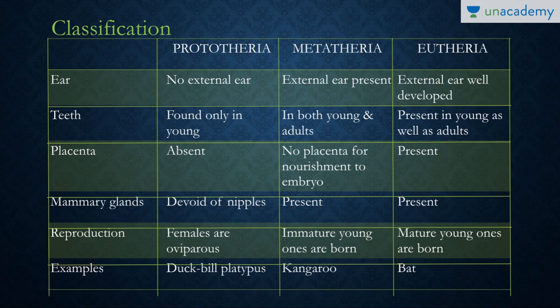Eutheria has a well-developed placenta, leading to the formation of mature young ones. Mammary glands are present in Prototheria but devoid of nipples, while nipples are present in both Metatheria and Eutheria. Examples include Ornithorhynchus, or duck-billed platypus, for Prototheria; kangaroo, also known as Macropus, for Metatheria; and Eutheria has a large variety of organisms.